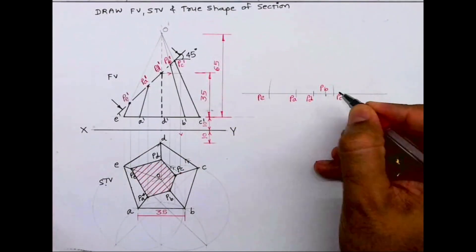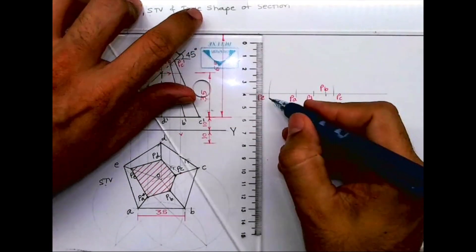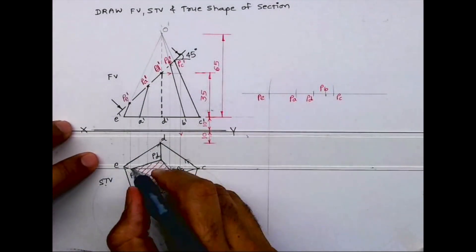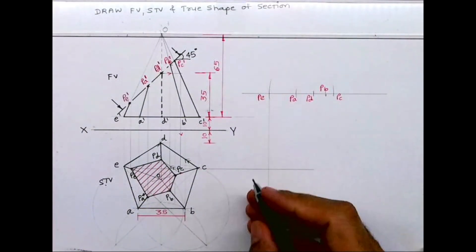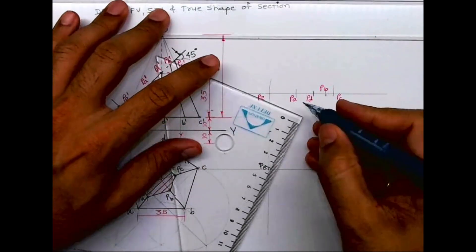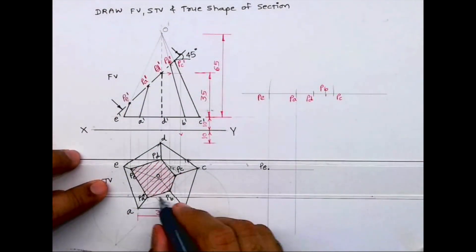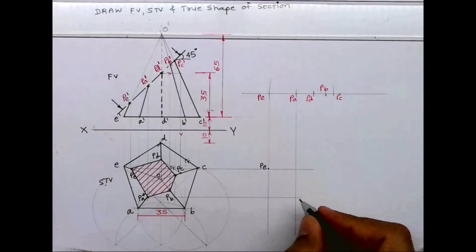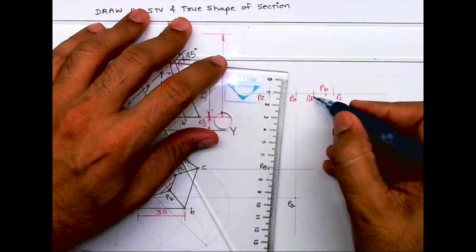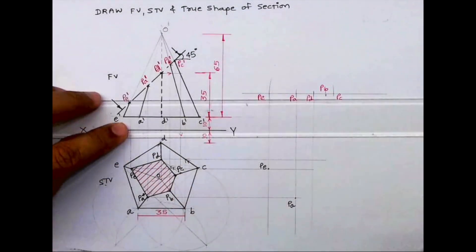We have marked all the points. Now we need to project from the front view. PE from here and PE from the top view — wherever it cuts, that will be the final point. Same way, project PA from here. Same way, PD from here and PD from the top view.